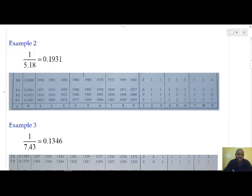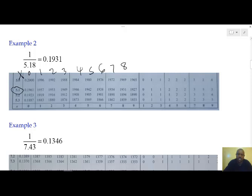Second example: we have the reciprocal of 5.18. We move to x. Under x, we go down until we have 5.1. Then inside the table we move across to locate the value digit — 0, 1, 2, 3, 4, 5, 6, 7, 8. At 8, we drop down to where the two numbers meet. They meet at 0.1931, and that is the answer to our question.